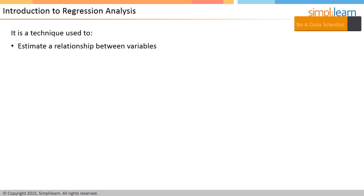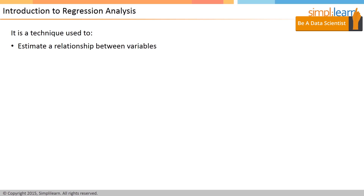Often professionals want to know if there is a relationship between two or more variables. For instance, is there a relationship between the grade on the third French exam a student takes and the grade on the final exam? If yes, then how is it related and how strongly? Regression can be used here to arrive at a conclusion.